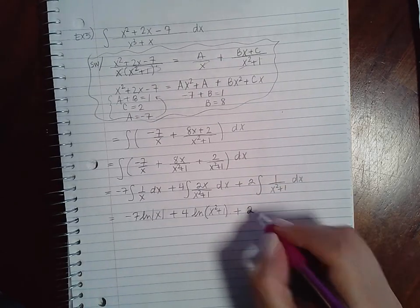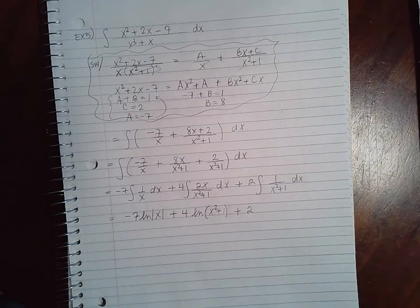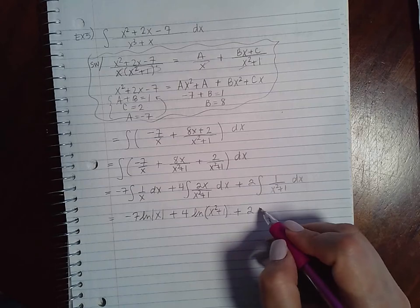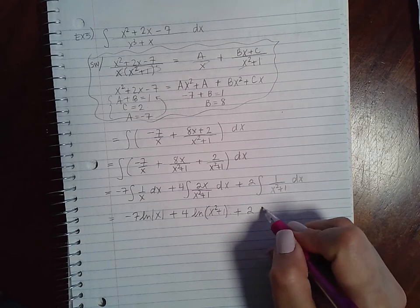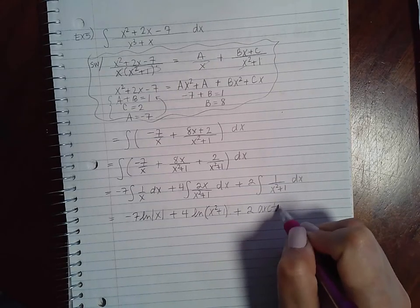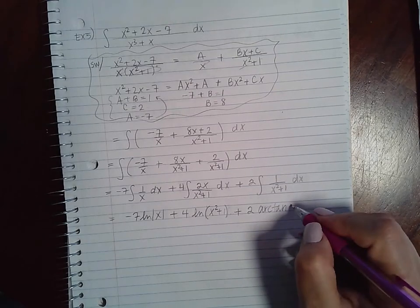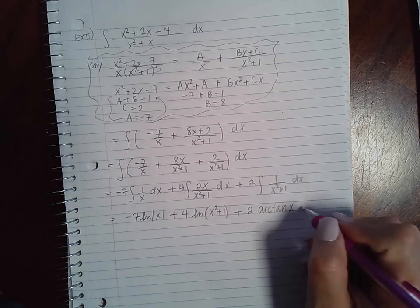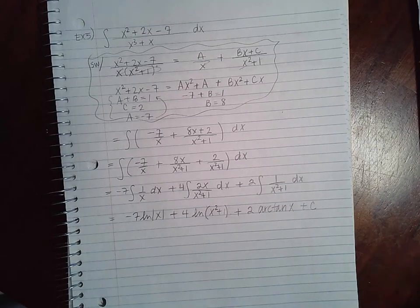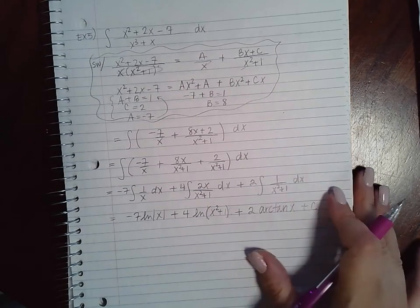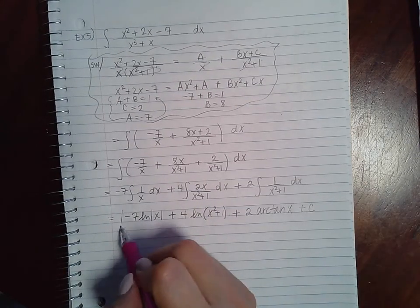Then plus 2, and the integral of 1 over x squared plus 1 is just going to be arctan of x over 1, which is just x. And this is an indefinite integral, so I am going to put the plus C. And we've integrated each piece, so we are done.